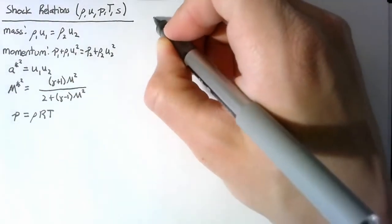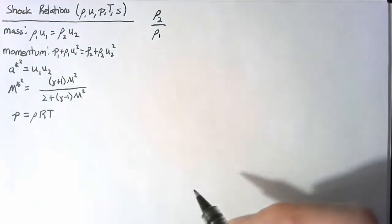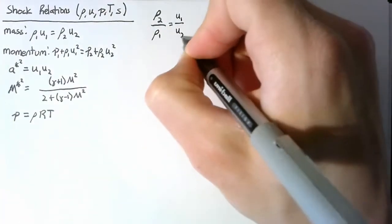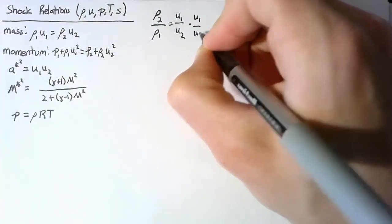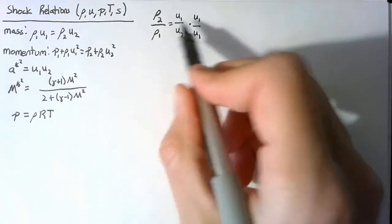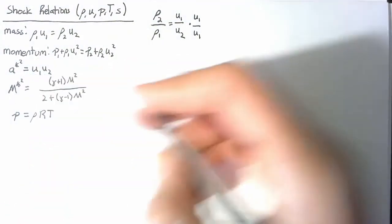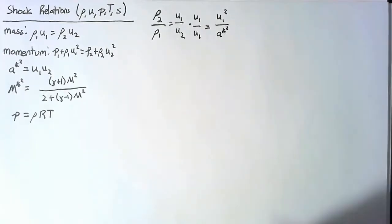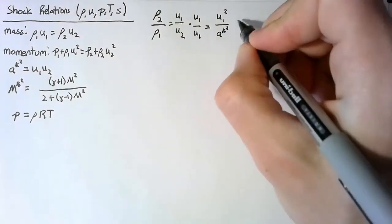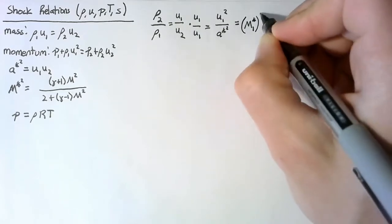So let's start off with finding the relationship for ρ. What we're trying to get is ρ₂ divided by ρ₁, and this is, from the mass equation, just equal to u₁ divided by u₂. To work on this a little bit more, I'm going to multiply by u₁ over u₁, which gets us to u₁ squared divided by u₁u₂. But u₁u₂ is exactly equal to a*², so this is just u₁² divided by a*². And u₁ divided by a* is exactly the definition of the critical Mach number, so this is M₁*².